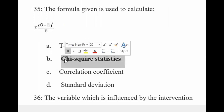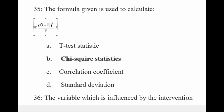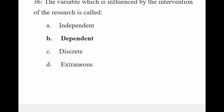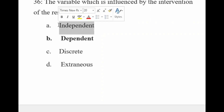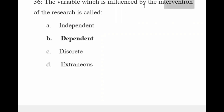We have two categorical variables associated with observed and expected frequency difference. The variable which is influenced by the intervention of the researcher is called the dependent variable. The independent variable is not the result of the researcher's intervention, while the dependent variable is influenced by the researcher.